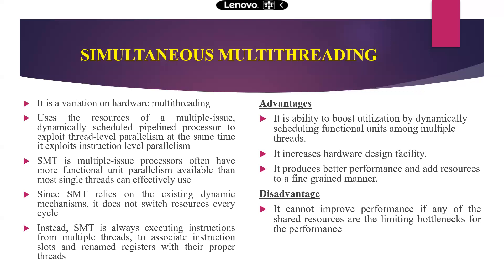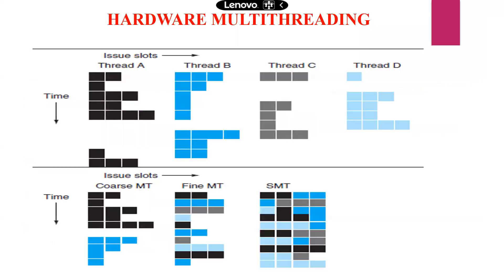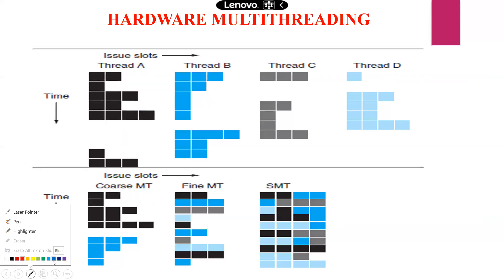The disadvantage of SMT: it cannot improve performance if any of the shared resources are the limiting bottleneck. Now, here is the overall comparison of hardware multi-threading. We have four threads — Thread A, Thread B, Thread C, and Thread D — with issue slots. We will apply three techniques: coarse-grained multi-threading, fine-grained multi-threading, and SMT.